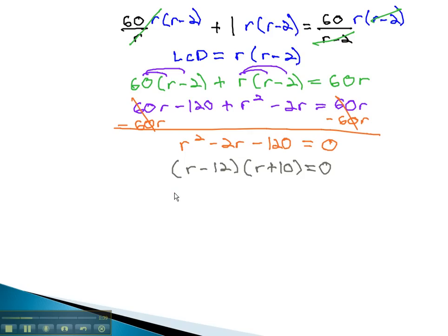To get our solutions, we set each factor equal to 0. r minus 12 equals 0, and r plus 10 equals 0. We can quickly solve by adding 12 to find that r equals 12, or subtracting 10 to find that r is negative 10.